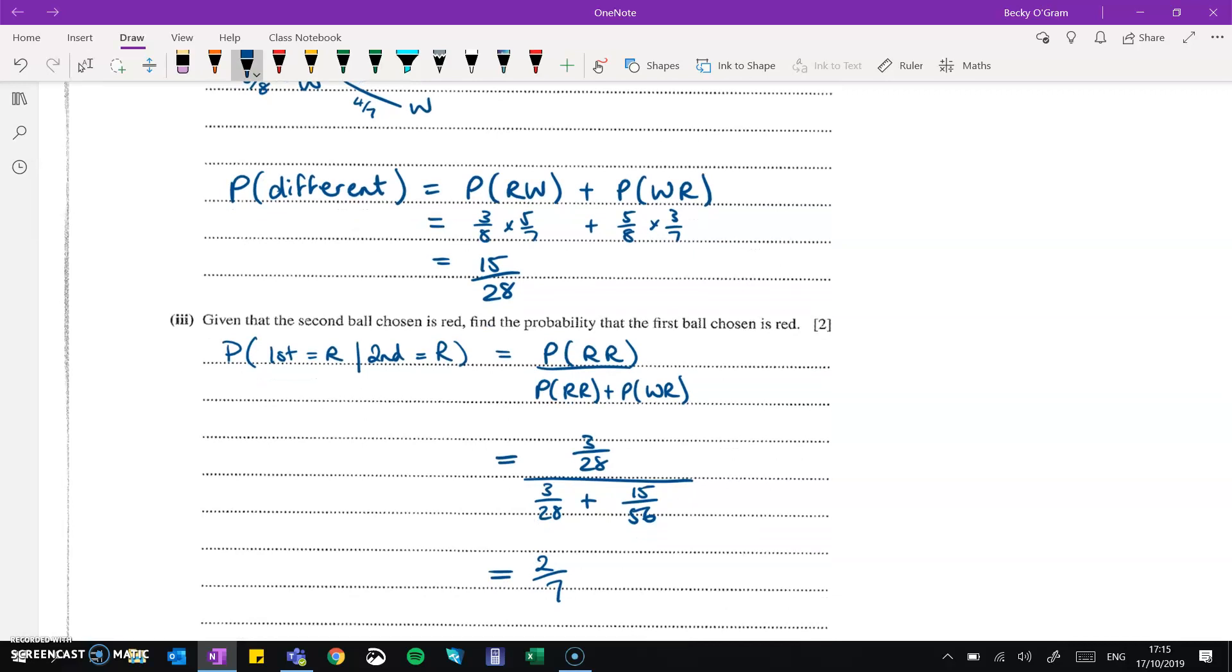Given that the second ball chosen is red, find the probability the first ball chosen is red. So first being red, given that the second is red. So that's the probability of the first being red and the second being red, divided by the probability of them both being red, and then the probability of getting white, then red. So reading those off the tree diagram and continuing that through, we get 2 sevenths.